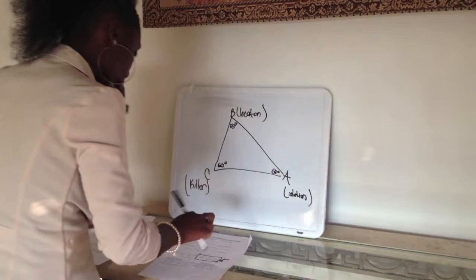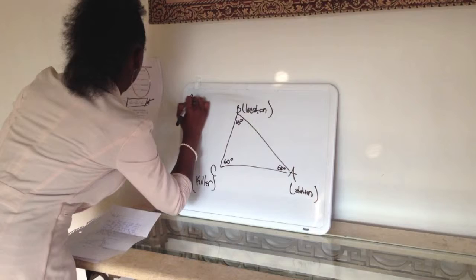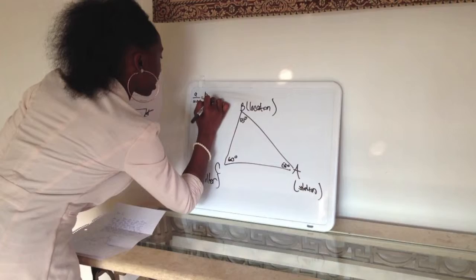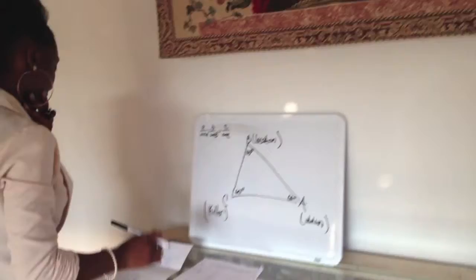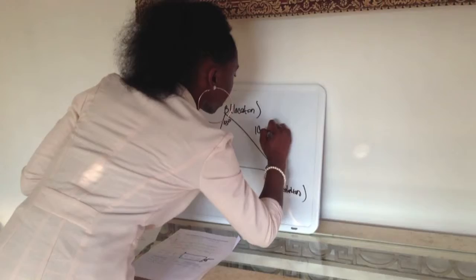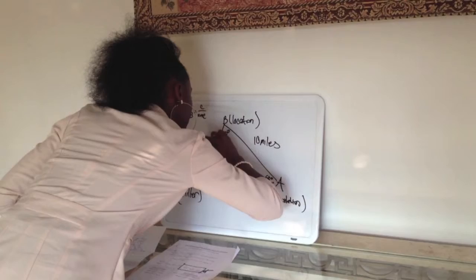Now, in order to find the distance, we can use this equation. Sine A equals B. Sine B equals C. Sine C. He told us that the station and location were approximately 10 miles apart. The location from the killer was approximately 20 miles apart.